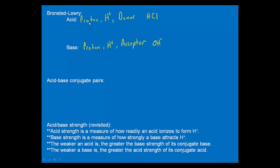For something to be a Bronsted-Lowry acid, what must it have as part of its structure? If it's a proton donor or hydrogen ion donor, the formula must have hydrogen — at minimum. Those would need to be acidic hydrogens, since not all hydrogens in molecules come off to produce H⁺. But at least you'd need hydrogen in the formula, along with some anion you're familiar with.